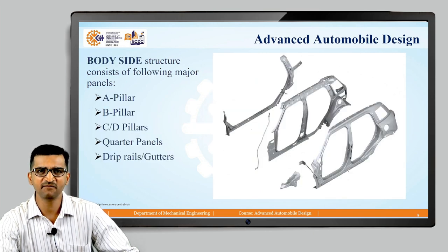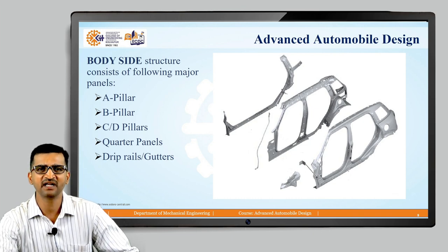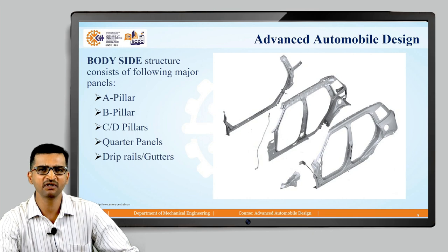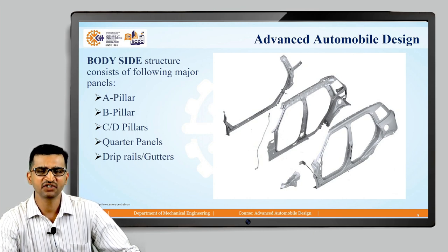Next is the body side — these are the side structures of BIW, including A pillar, B pillar, C and D pillars, quarter panels, and drip rail. The A pillar is the region between the front glass and front door. The B pillar is the middle pillar between two doors, and the rear end pillars are C and D pillars. D pillar exists only on SUVs; for hatchbacks and sedans there are only A, B, and C pillars. The main function of A, B, and C pillars is to support the roof under rollover — if the car topples at high speed, the roof should not crush, so these pillars must be very strong.